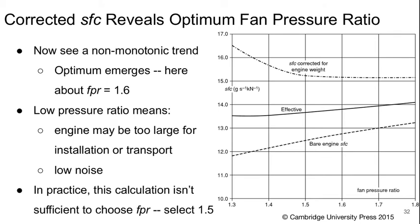Now, finally, we see an optimum in specific fuel consumption. Specific fuel consumption falls and then begins to rise again. It looks like the specific fuel consumption that gives the lowest fan pressure ratio is around somewhere between 1.6 and 1.7. If we have a very low fan pressure ratio, that means the engine might be too large for installation on the aircraft or for transport, but it will also have very low noise. As we just discussed, this calculation is pretty simplified and it's not really sufficient to choose our fan pressure ratio.